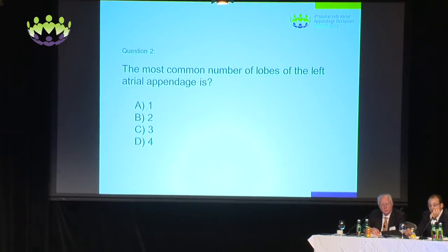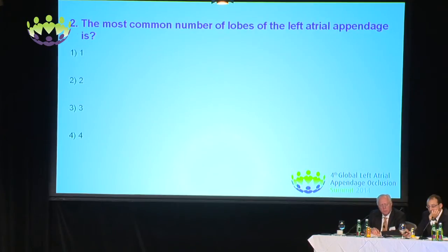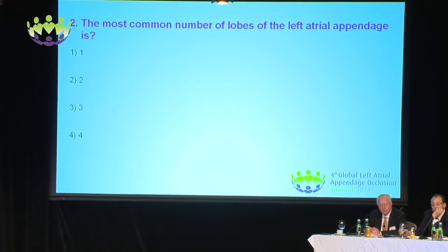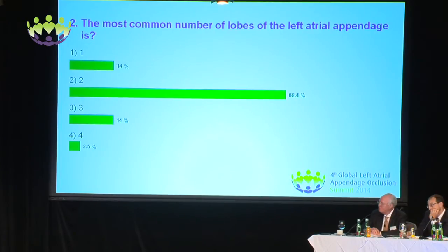The second question from the system: the most common number of lobes of the left atrial appendage is one, two, three, or four? And the answers, please. So the majority of you said two lobes. Can we go back to the presentation, please? Thank you.